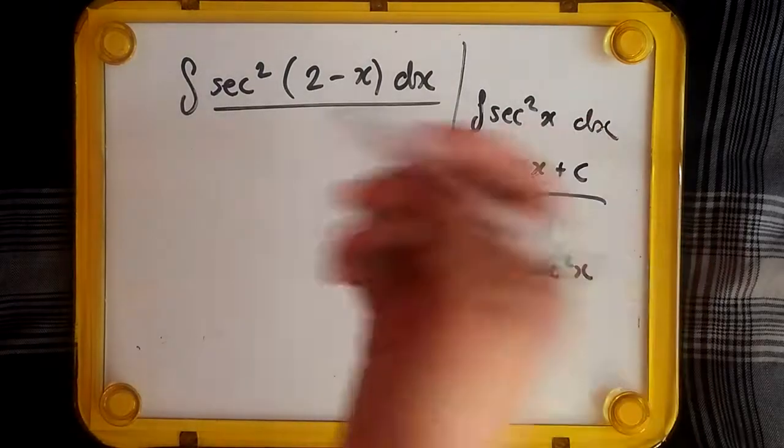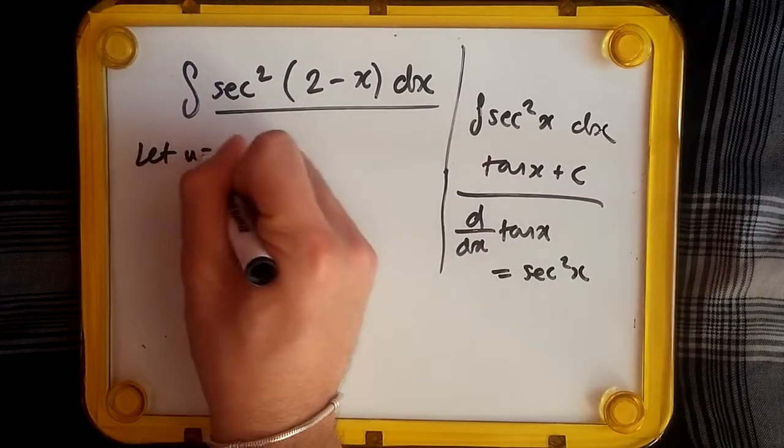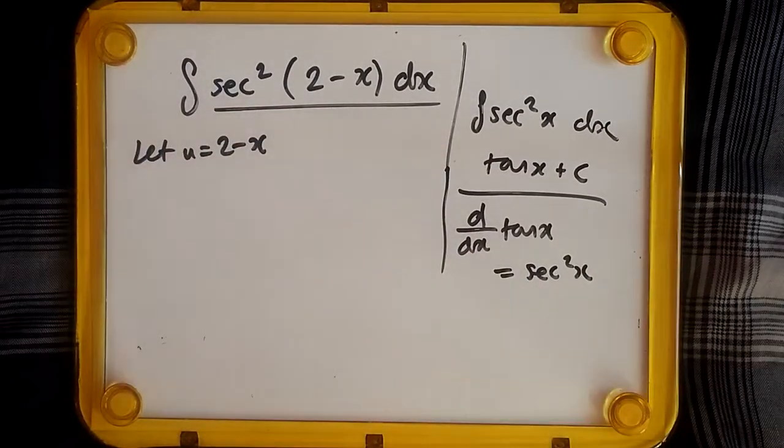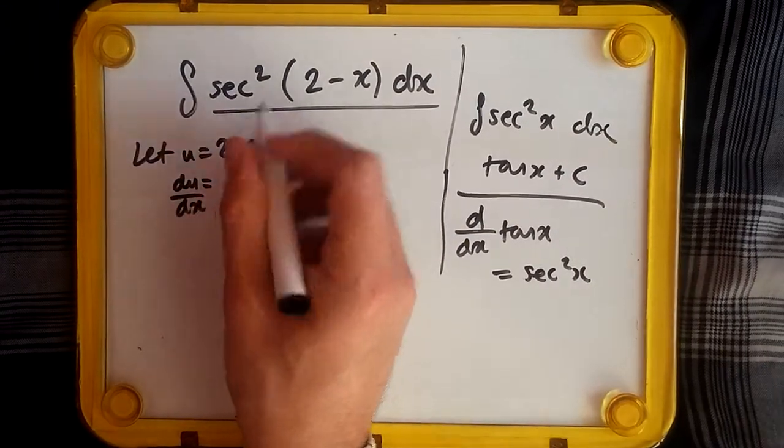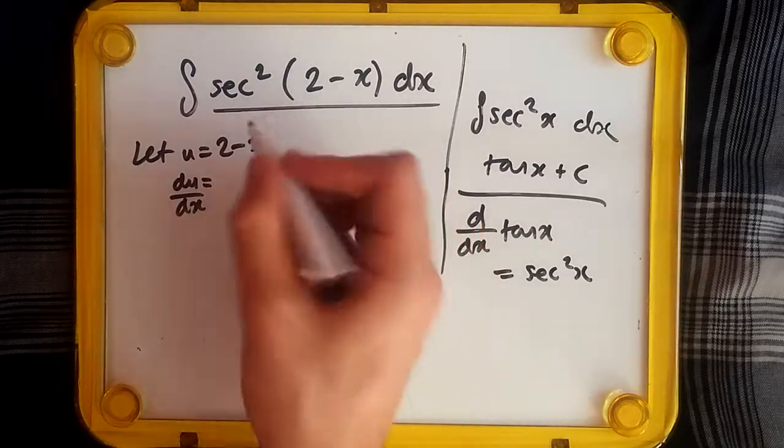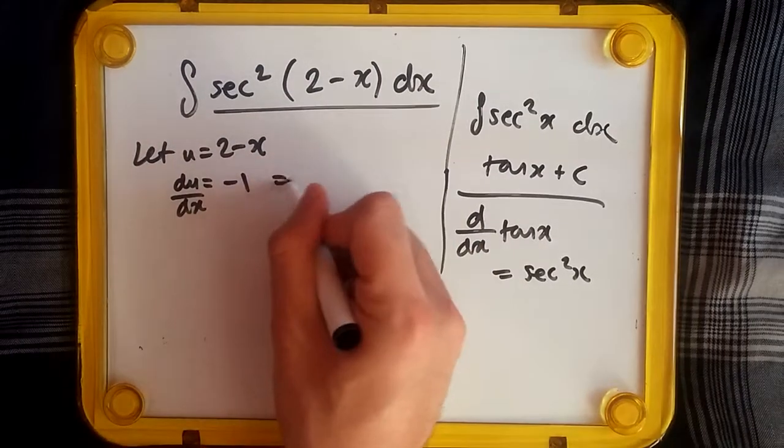So suppose we let u equal 2 minus x. Easy. Take the derivative. What do we get? We get du/dx equals the derivative of this one, which is just minus one.